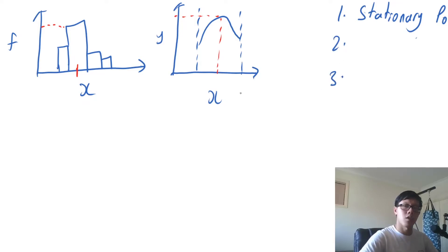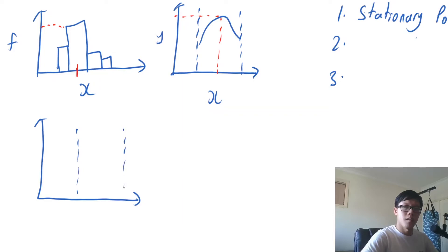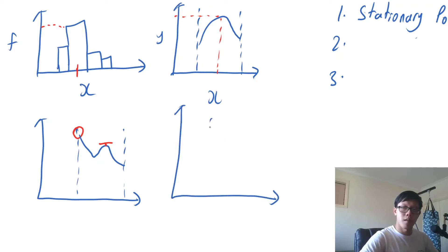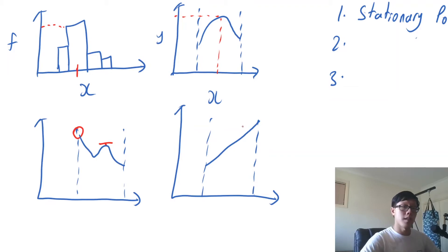But that's not the only thing — we have two more things we need to check. So if I were to redraw my probability density function, it could also look like this. In this case, even though we have a local maximum here, it's not the highest point on our PDF — it's not our global maximum. That is actually over here. Or I could draw it like this, where our PDF doesn't even have any stationary points, but we still would have a global maximum — a mode — which is just the highest point on the graph, over here.